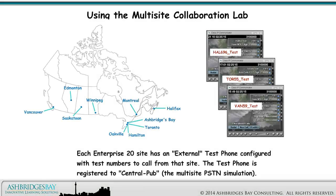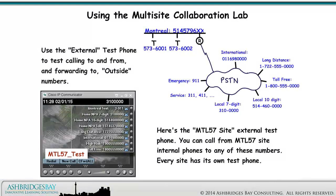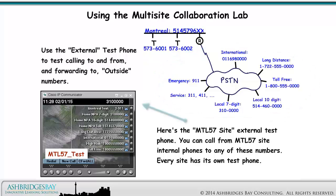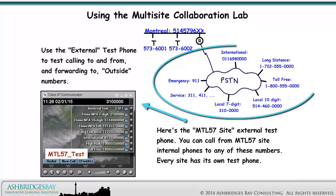Each Enterprise 20 site has an external test phone configured with test numbers to call from that site. The test phone is registered to Central Pub, the multi-site PSTN simulation. Use the external test phone to test calling to and from, and forwarding to, outside numbers. Here's the Montreal 57 site external test phone. You can call from Montreal 57 site internal phones to any of these numbers. Every site has its own test phone.